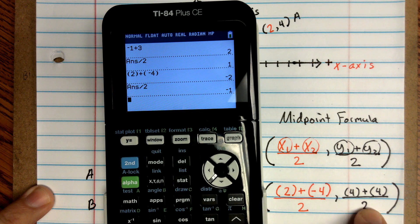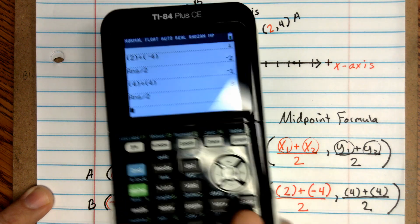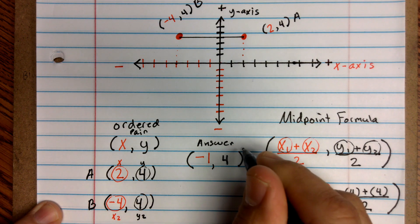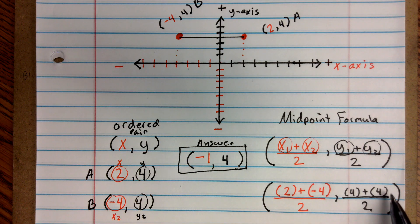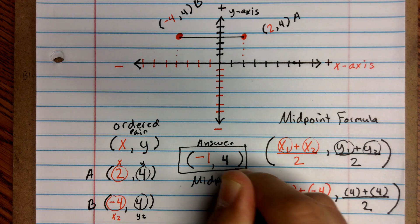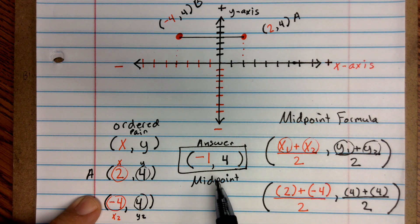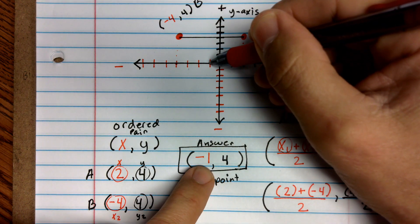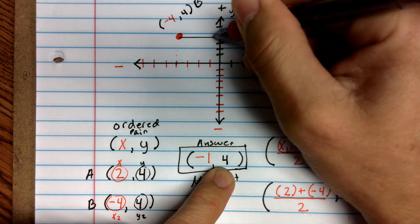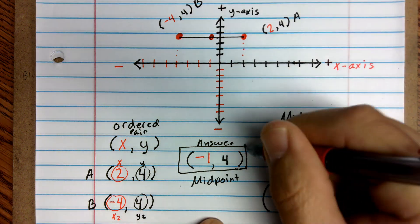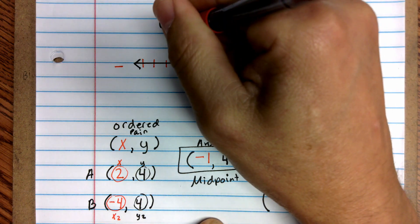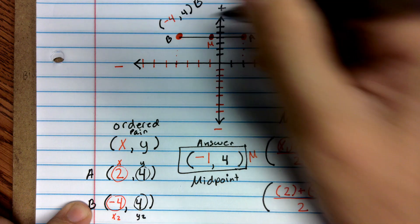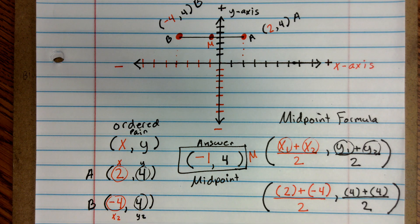For the y-component: 4 + 4 divided by 2 gives 4. So the midpoint is (−1, 4). I'll label that as 'midpoint' underneath the answer. Graphing it: from the origin go one unit to the left (negative 1) and up four — that's point M, sitting right in the center between point A at (2, 4) and point B at (−4, 4). Now you know how to find a midpoint using the midpoint formula and you're ready to solve all the problems on your paper.